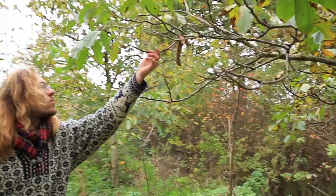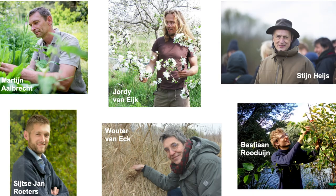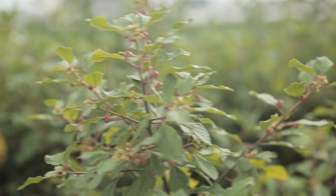Later in this presentation I'll have the privilege to show you a sneak preview of the wireframes of the database. For me personally, the importance of developing this list and database motivated me to conduct my master thesis research on this subject. In my thesis I made a selection of 100 promising food forest species and 80 key functional plant characteristics. This thesis formed the starting point for the project. Afterward, we formed a working group consisting of Martijn, Wouter van Eck, Bastiaan Rooduin, Stijn Huis, Sietzian Roeters, and myself, with various Dutch and Flemish practitioners contributing as well. From the top 100 species list, we selected 55 species for commercial use.